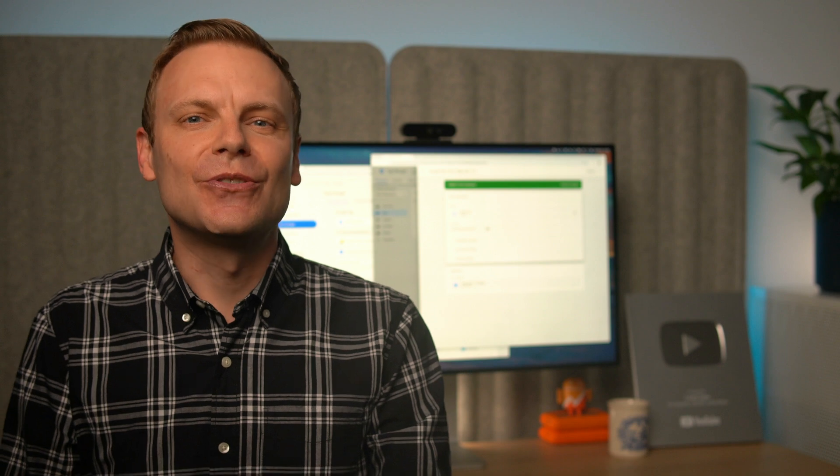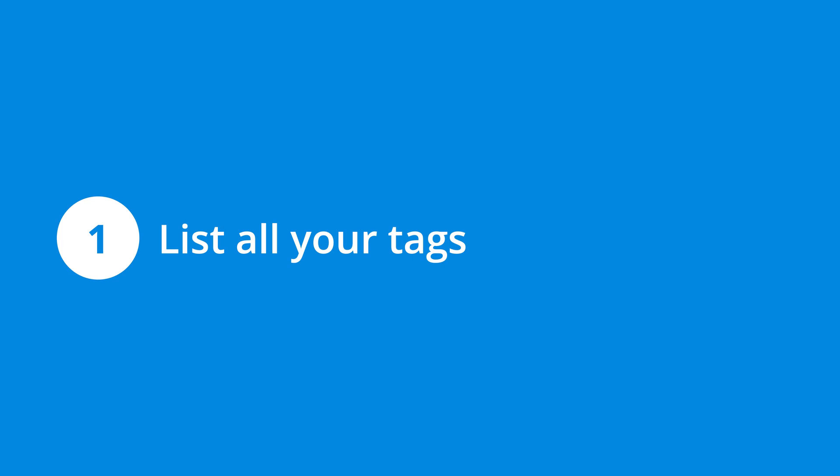Now let's run through my migration checklist. Depending on the current tags that have been added to your website, you can customize this checklist. If you want to download a copy of my Google Tag Manager guide that includes this checklist, you can find a link in the description below this video. Step 1 is to create a list of your existing tags. This should include your Google Tag and any other tags you've added to your website. It's also a good idea to make a note of how the tags are added — for example, you might be using a plugin to add Google Analytics, or maybe you've added the Meta pixel by pasting it into your website's template. Step 2 is to create a list of any tracking customizations you've made.